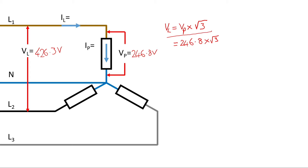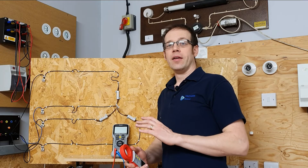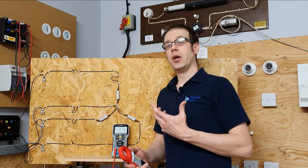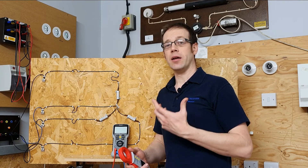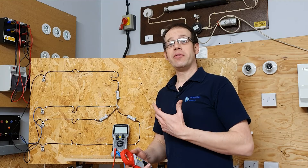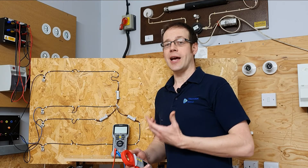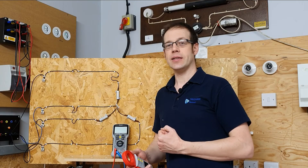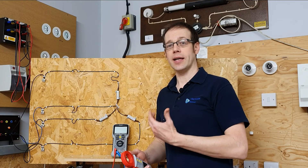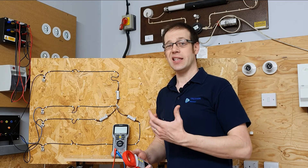This formula is really important to take into your exams: VL equals VP times root three for a star connected load. Now we've seen the voltage relationship, we're going to look at the relationship between line current and phase current in a star connected three-phase system.